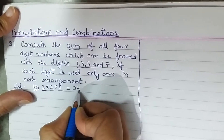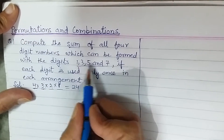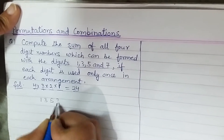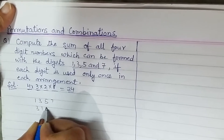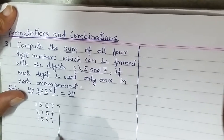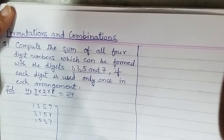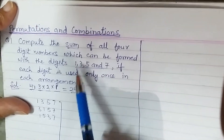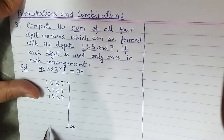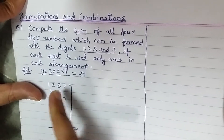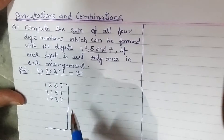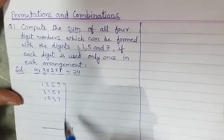So the total number of possible arrangements of four-digit numbers using these digits only once is 24. One arrangement is 1357, another is 3157, another is 1537, and so on — we can write 24 such arrangements. We need to compute the sum of all these four-digit numbers, but don't worry, we are not going to add them all manually. We are looking for an easy method.